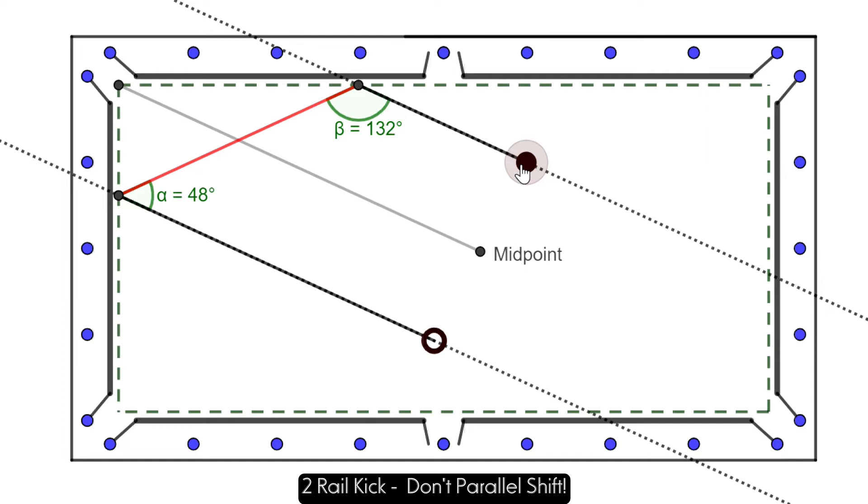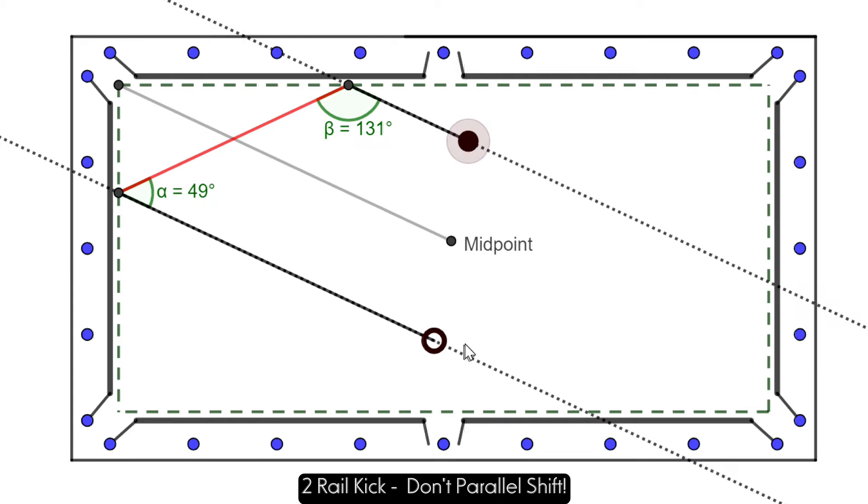Now that happens in raw math, but in terms of anything beyond a one rail bank shot, two rails and beyond, your raw math reflection angles are totally out the window because of the way speed compounds with multiple rails.